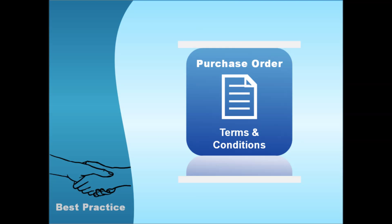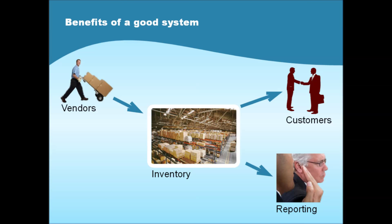If you are frequently purchasing new stock from vendors and fulfilling multiple orders every day, then it is essential that you have a good purchasing process in place. One of the cornerstones of an efficient purchasing process is purchase orders. They give you a record of what has been ordered, which is essential for keeping track of your inventory and extremely useful for both forecasting and reporting on many aspects of your business.